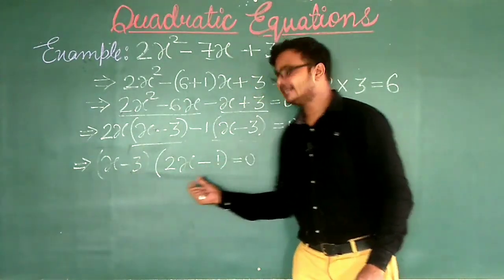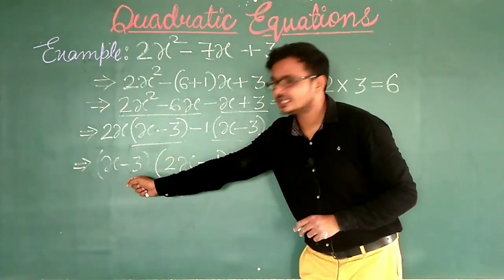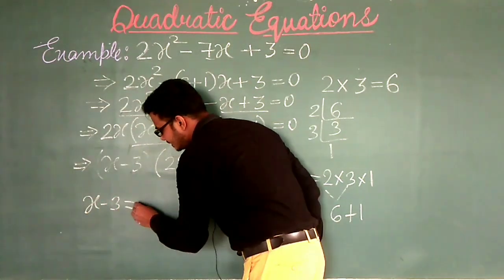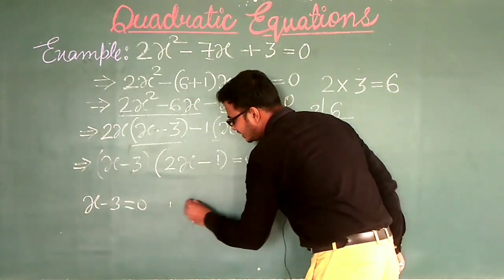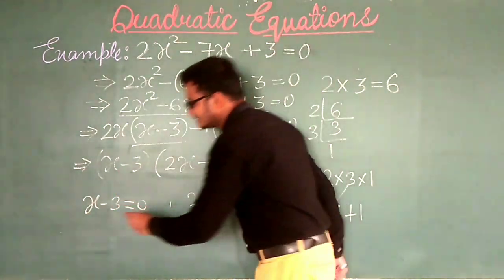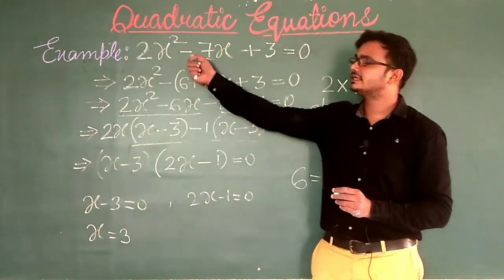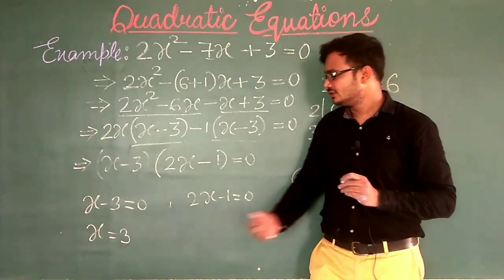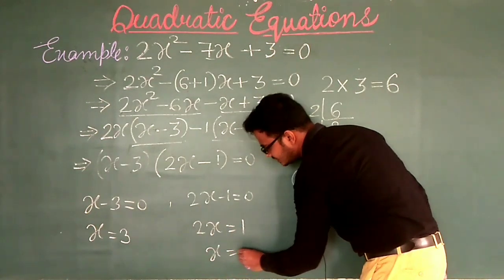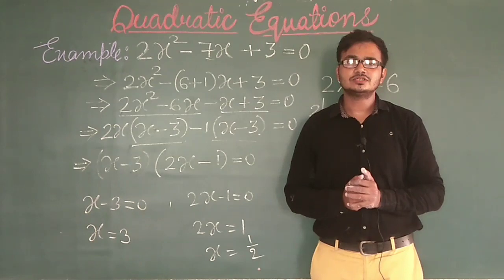The multiplication of both factors is 0, which means any one of them must be 0. So to find the values, we equate each factor to 0. Either x minus 3 is equal to 0, giving x is equal to 3 — this is the first value of x. Or 2x minus 1 is equal to 0, giving 2x is equal to 1, so x is equal to 1 upon 2. This is the second value. Since this is a quadratic equation, we get two values of x.